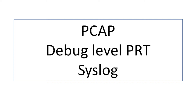We're going to focus on the PCAP function that the phone has for generating packet captures within the phone itself, which is very nice. Also the PRT function — the problem report tool — and how to set it to debug before we generate the PRT. We're also going to take a look at the syslog function, so we can use a PC to have the phone send different levels of logging so we can record what happens before, during, and after the event.